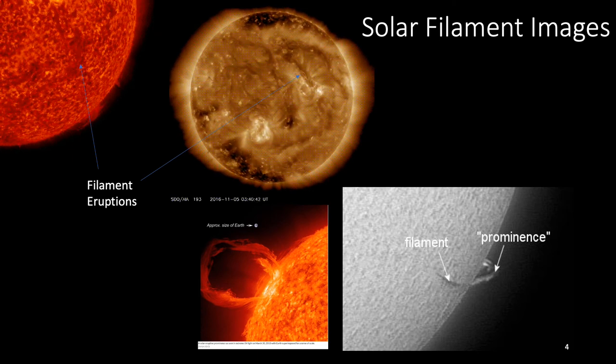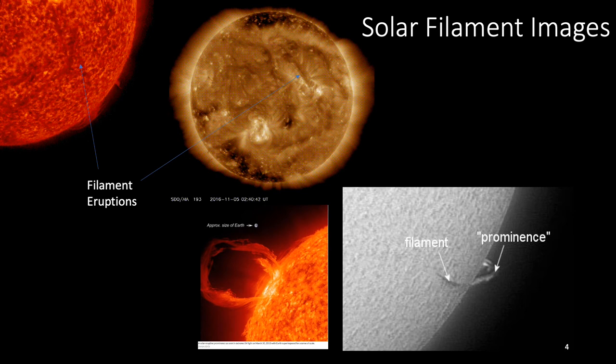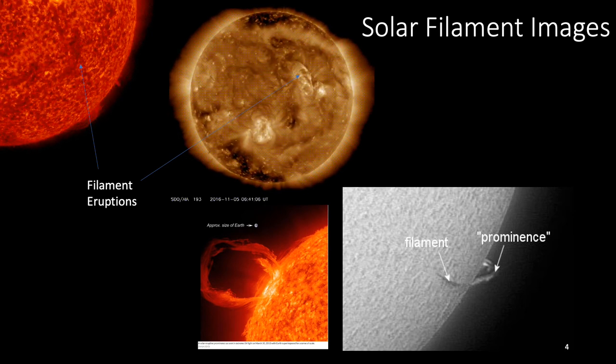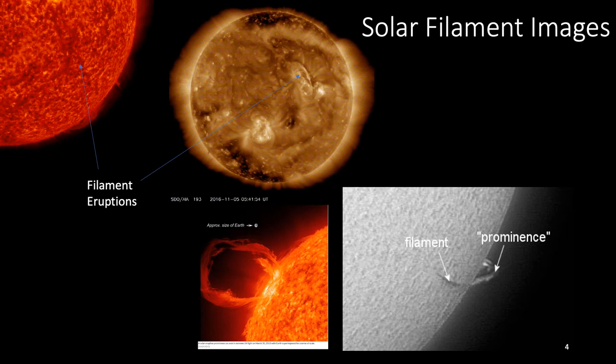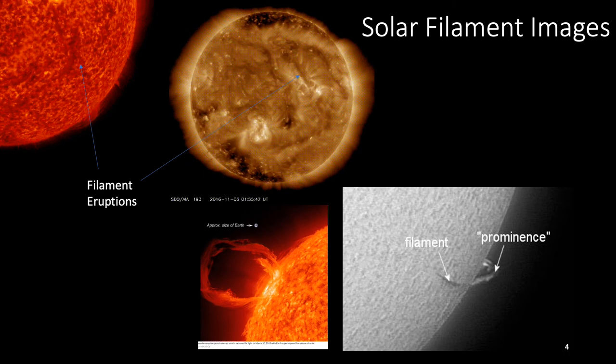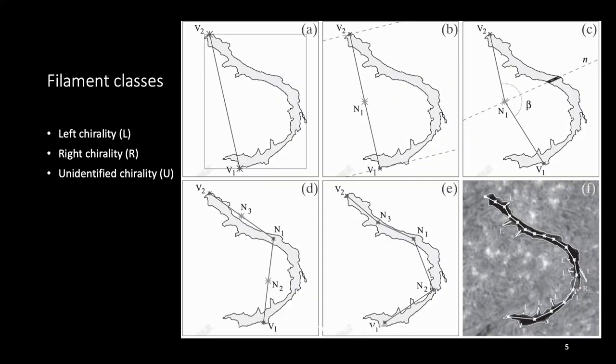The filament eruption, which can trigger coronal mass ejections, does not only cause the northern lights but can also disturb Earth's atmosphere, such as causing geomagnetic storms, impacting satellites' power grid and other technologies. The probability of causing harm indirectly depends on the class of filament, which can be left, right, or unidentified. The solar filament classification being a complex task is generally done by expert solar physicists. There are multiple theories to identify the class of filament.